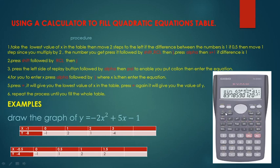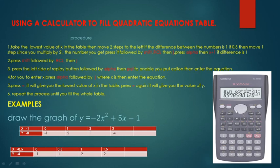Then press Shift again, then RCL, then the crossing bracket. After that, press the left side of the replay button — it will give you a blinking cursor. In that blinking cursor, press Alpha for the second function, then press Pol. That means you've written the colon. After the colon, you write the equation you've been given.